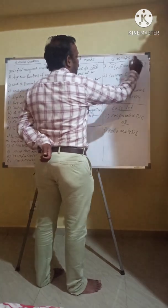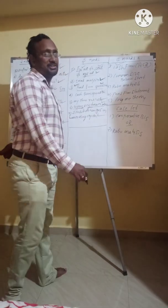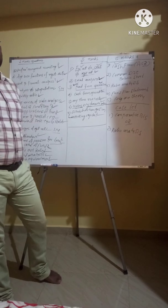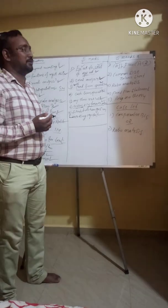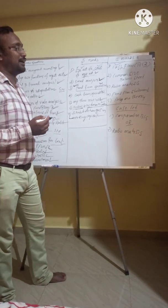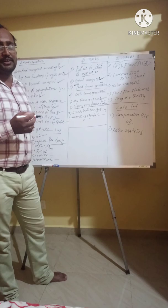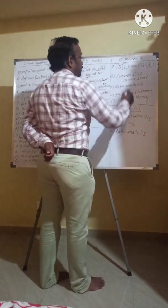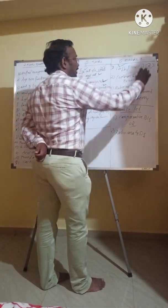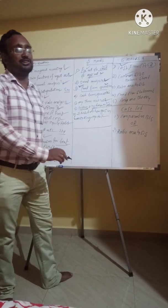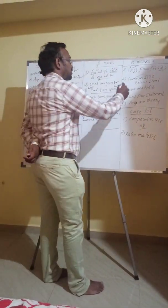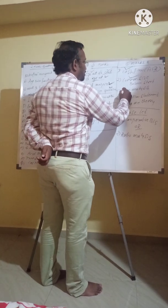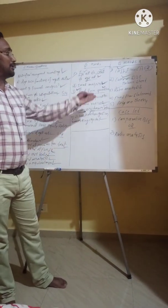We have cash flow statement according to AS-3. We have three activities: operating activity, financing activity, and investing activity. We also have common size balance sheet — this is also important. Ratio analysis is a very important chapter.